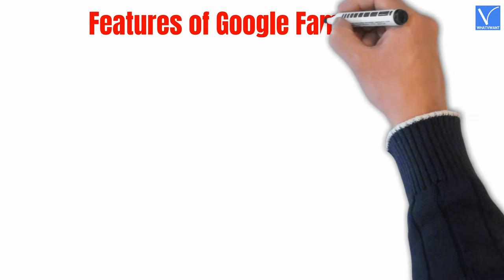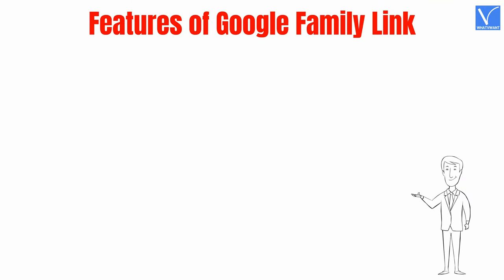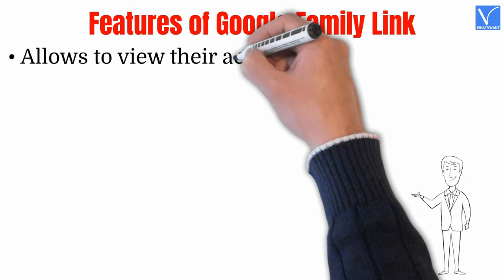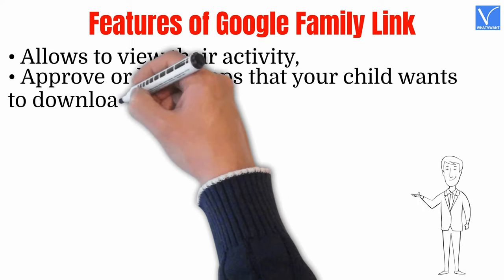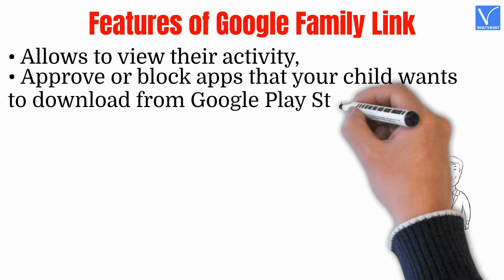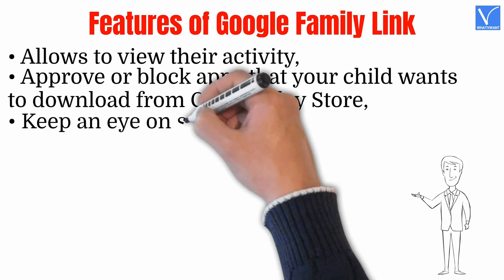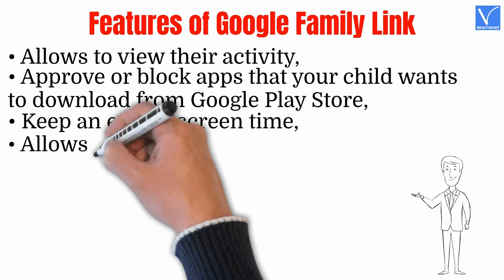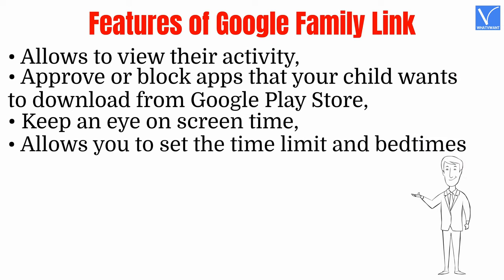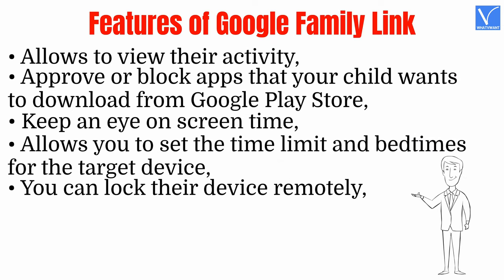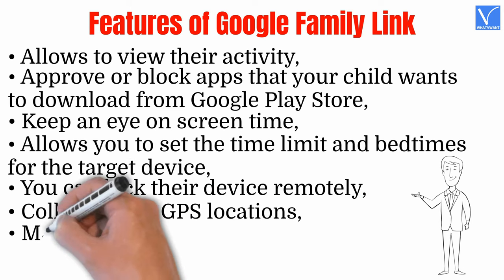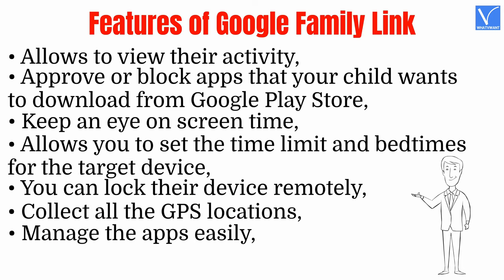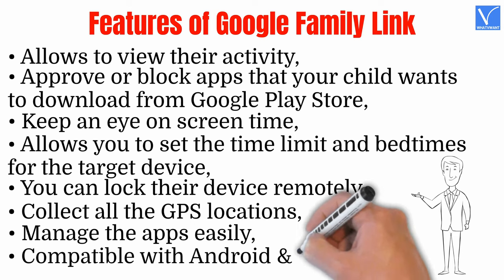Features of Google Family Link: Allows you to view their activity. Approve or block apps that your child wants to download from Google Play Store. Keep an eye on screen time. Allows you to set the time limit and bedtimes for the target device. You can lock their device remotely. Collect all the GPS locations. Manage the apps easily. Compatible with Android and iPhone.